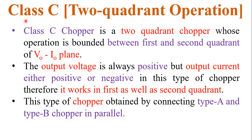Before I discuss Class C chopper, I have already explained in my previous video Class A and Class B chopper. Class A and Class B both have one quadrant operation, but Class C chopper has two quadrant operation. It means it works in the first quadrant and second quadrant. The output voltage of Class C chopper is always positive but the output current is either positive or negative.